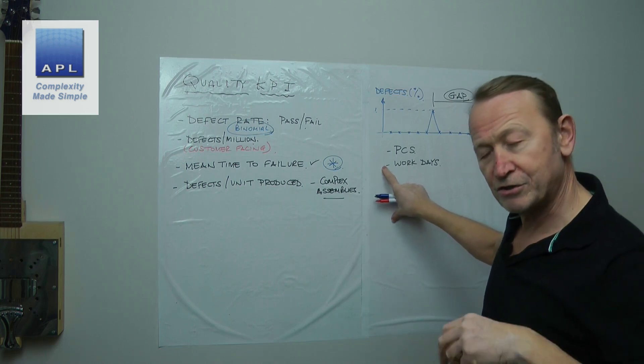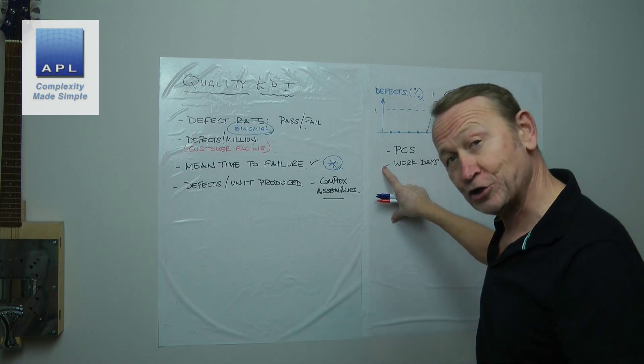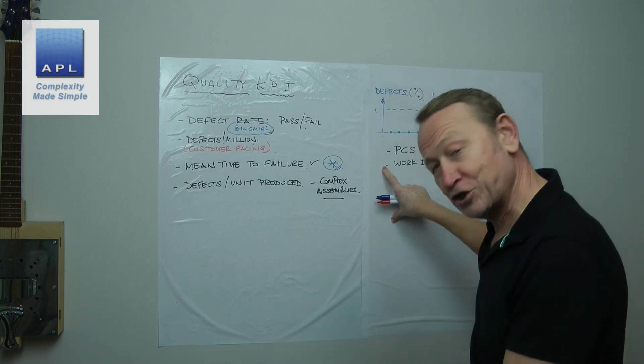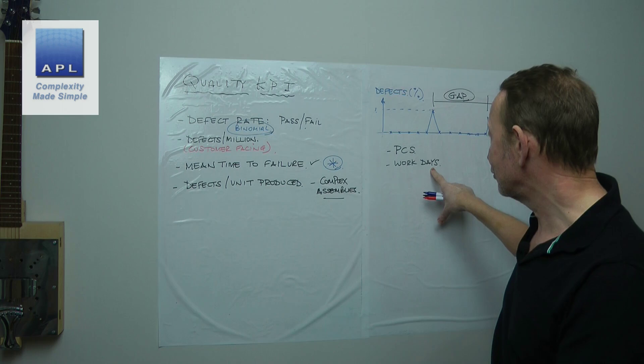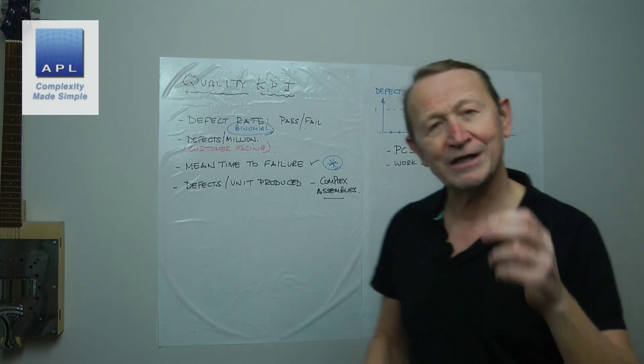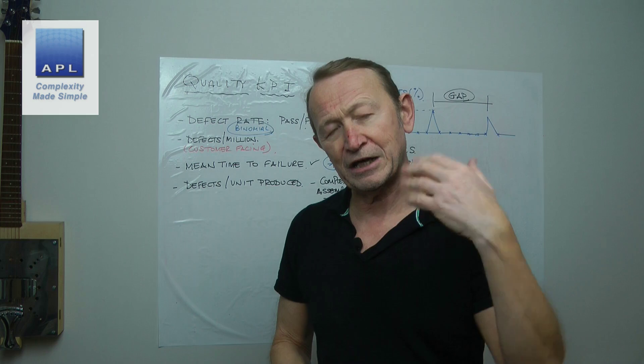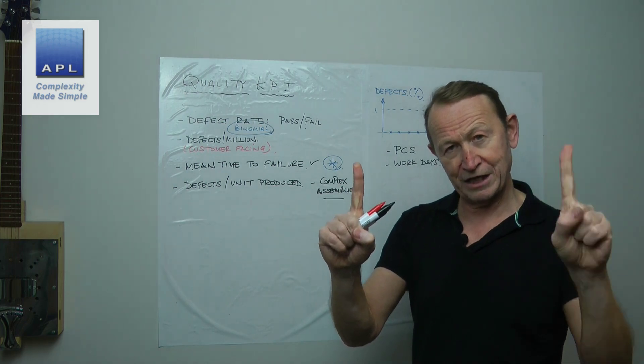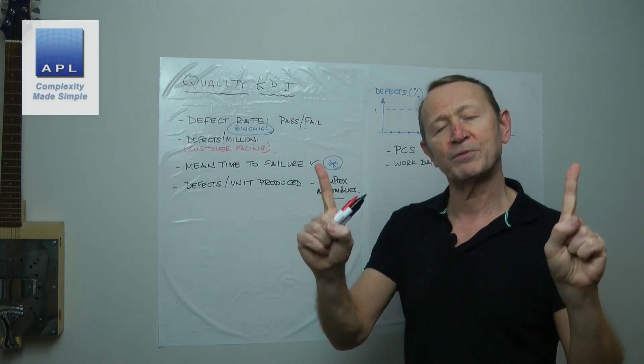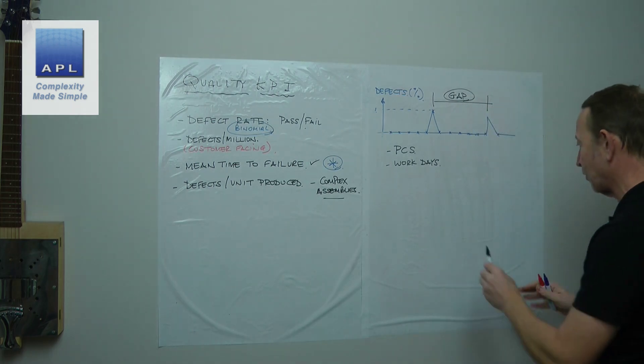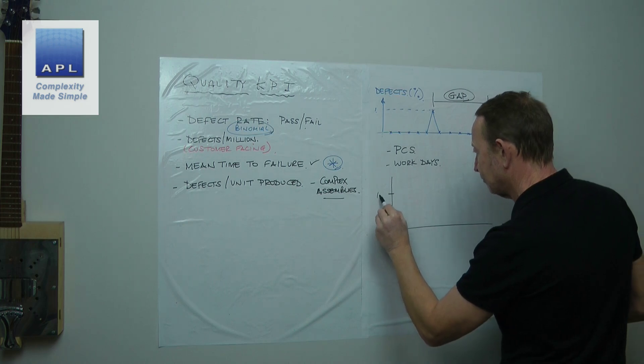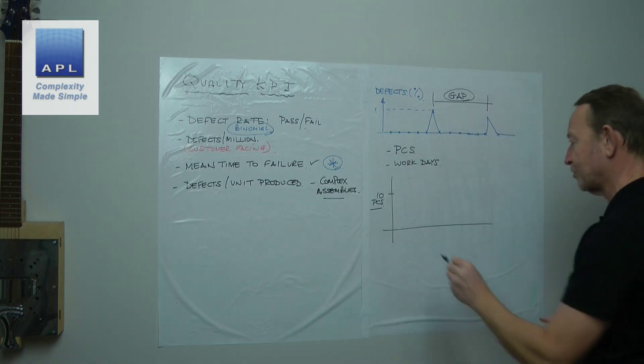But if you had a tendency to finish 20, then finish 5, then finish 1, then finish 15, then finish 3, and the production's not consistent, then work days is going to look odd. It's not going to work properly. And therefore you should count the pieces between each failure. Count the pieces between each mistake. Now obviously what this does is create a different graph.